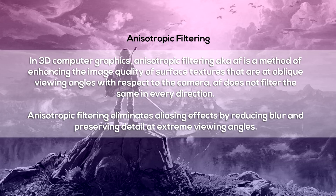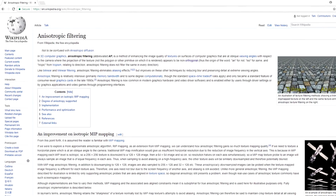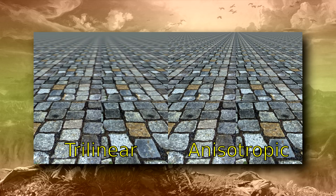In 3D computer graphics, anisotropic filtering — also known as AF — is a method of enhancing the image quality of surface textures at oblique viewing angles with respect to the camera. AF does not filter the same in every direction. It eliminates aliasing effects by reducing blur and preserving details at extreme viewing angles. A Wikipedia image shows the effects of trilinear versus anisotropic filtering on a brick road texture — the anisotropic filter produces a much crisper texture, especially across the distance and into the background.